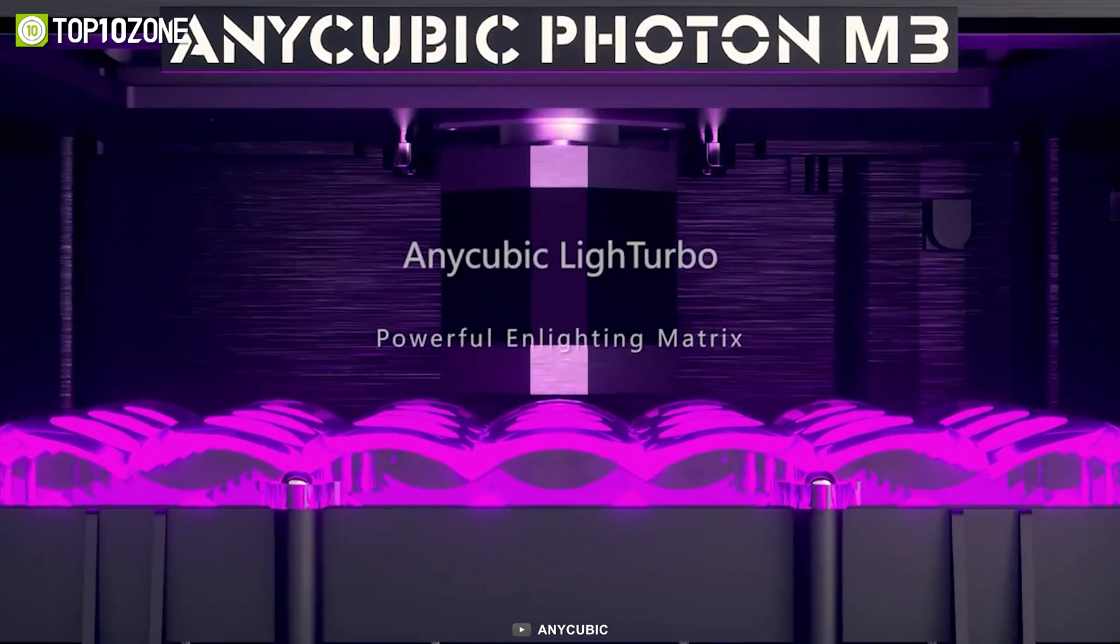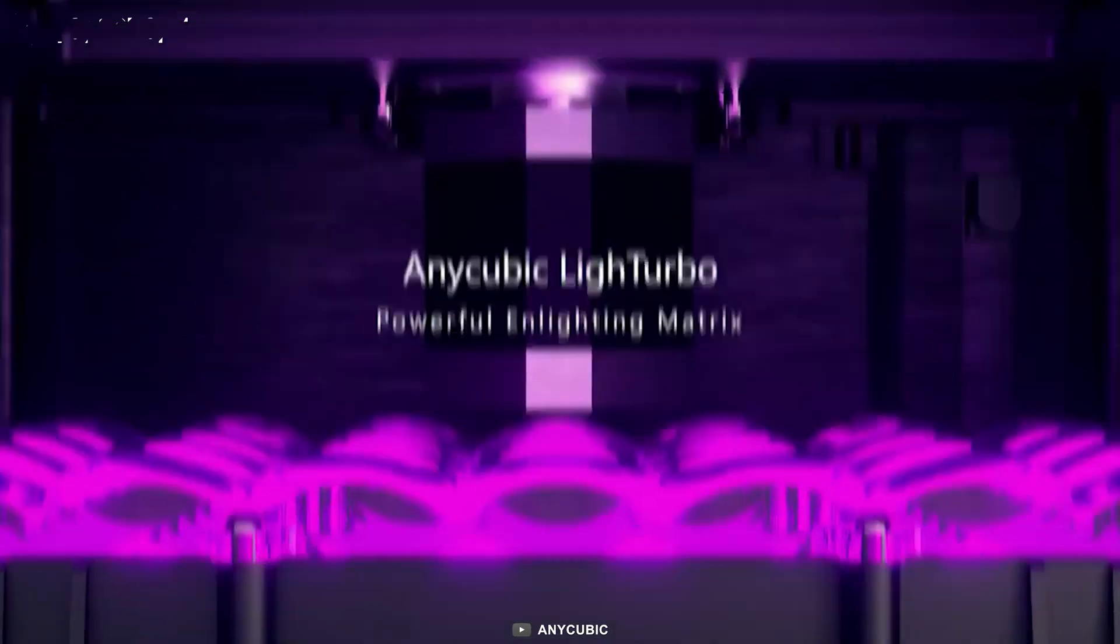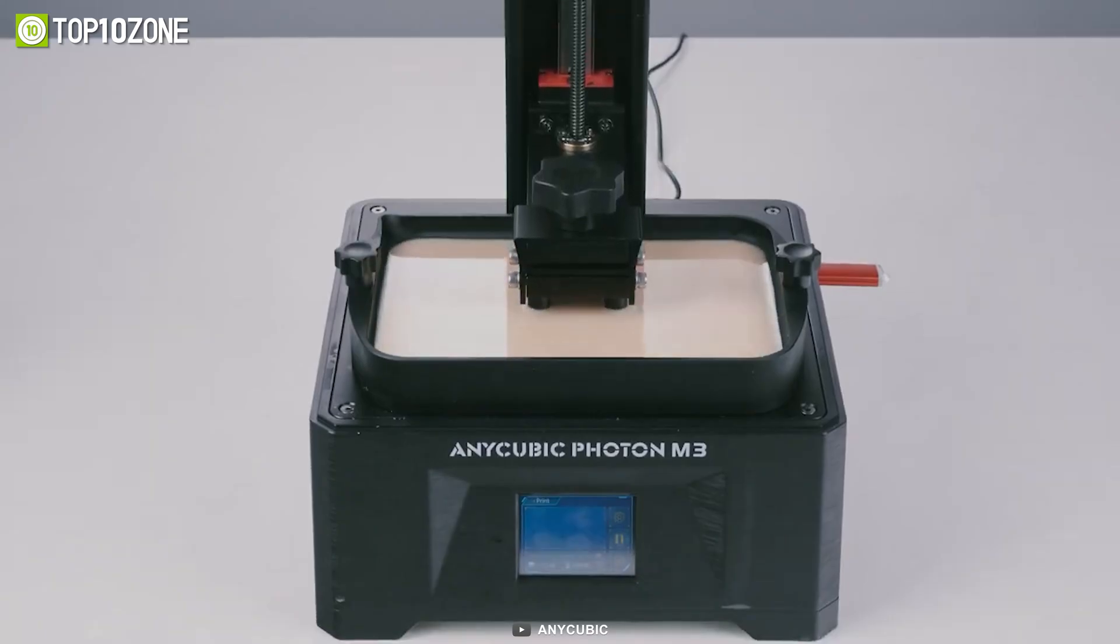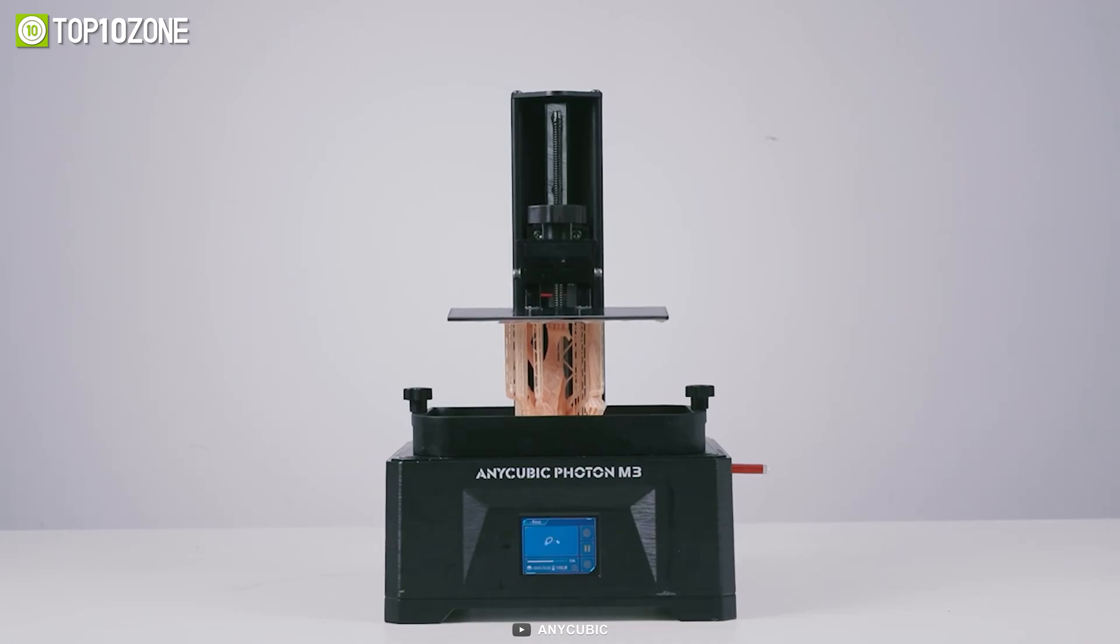Thanks to the Anycubic Light Turbo Matrix Laser system, the laser-engraved build plate has a texturized checkerboard pattern that dramatically improves adhesion and print success rate.